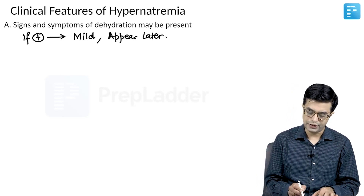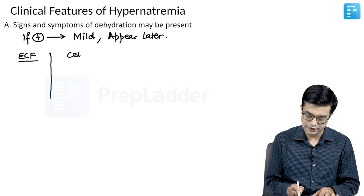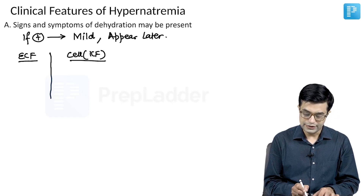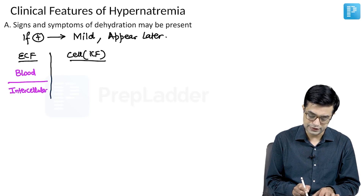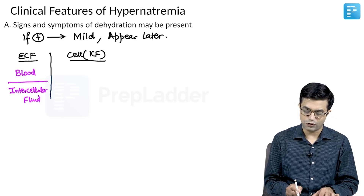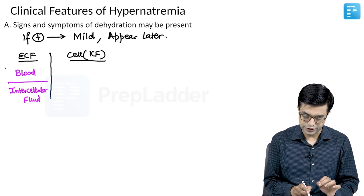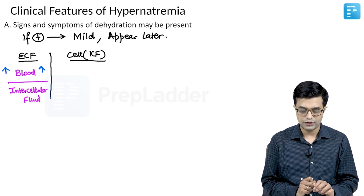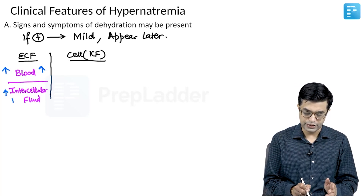Let me form a diagram here. Let us consider three compartments: ECF, and inside the cell which will be ICF. ECF is of two types — it can be either blood or the intercellular fluid, the fluid present between the cells. And there is water present inside the cell. Now, if the serum sodium concentration increases in the blood, the amount will also increase in the intercellular fluid.